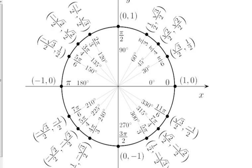Does anybody have anything special that you do to remember angles using the unit circle? I'm always interested to see what people do because everybody has something a little bit different. As far as positives and negatives, just go back to basic geometry: first quadrant, both x and y are positive; second quadrant, x is negative; third quadrant, both are negative; fourth quadrant, positive x, negative y.